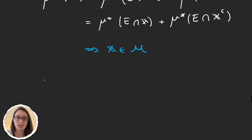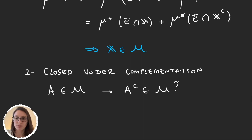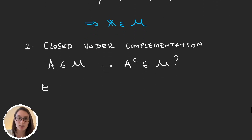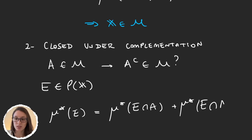The second step in proving that a set is a sigma-algebra is to prove that it is closed under complementation. So to prove this we want to take an element A that's in M and we want to see if A^c is also in M. So we have to prove that if A is measurable then A^c is also measurable. For the definition of measurability, just take a set E in the power set of X. Now because A is measurable, we know that the measure of E is equal to the measure of E ∩ A plus the measure of E ∩ A^c.